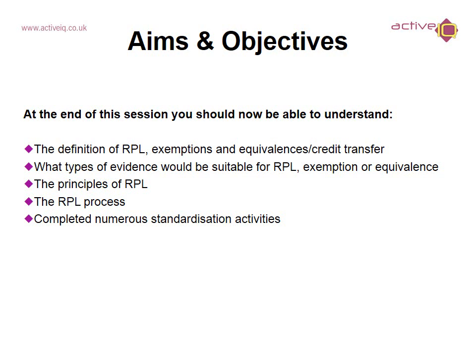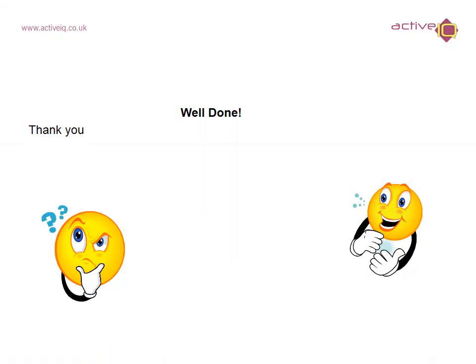Aims and objectives recap — this now concludes the end of this session. You should now be able to understand the definition of RPL, exemptions and equivalences or credit transfer; what types of evidence would be suitable for RPL, exemption or equivalence; the principles of RPL; and the RPL process. You have also completed numerous standardisation activities. Well done and thank you for your participation.